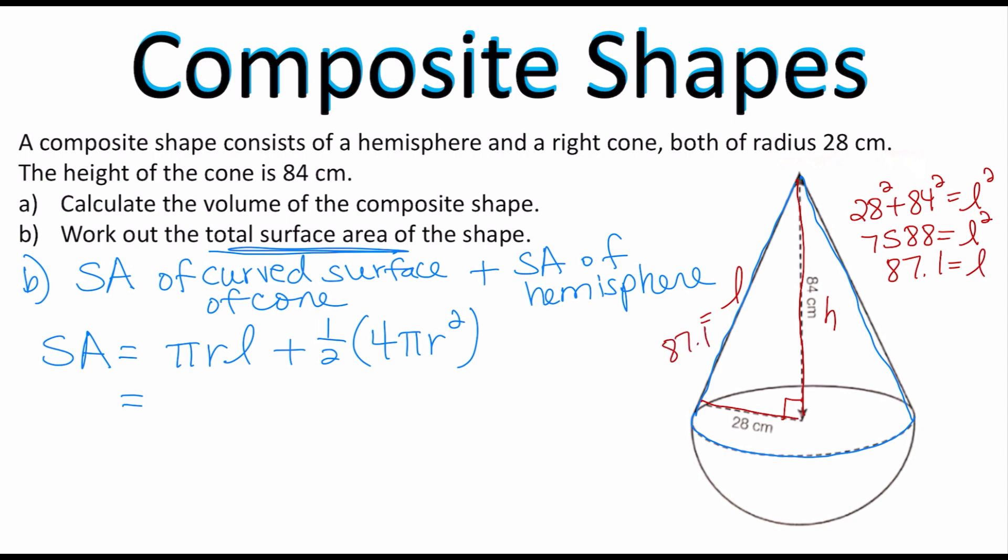So in the formula I'm going to write down π times the radius which is 28 times the slant height which is 87.1 plus one half of 4 is 2, so I'm just going to write 2π and then the radius is 28².